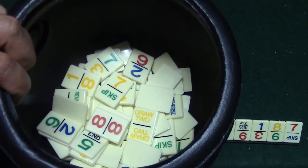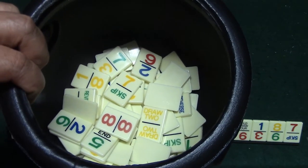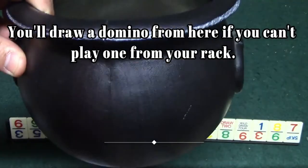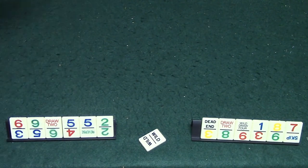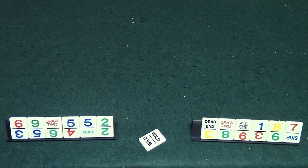Now right here is the boneyard and this is basically where you're going to be drawing your dominoes from. I just simply have like a little plastic cauldron that I put them in. That's just what I do, but typically you'll just put it somewhere to the side and you'll place all the dominoes face down.